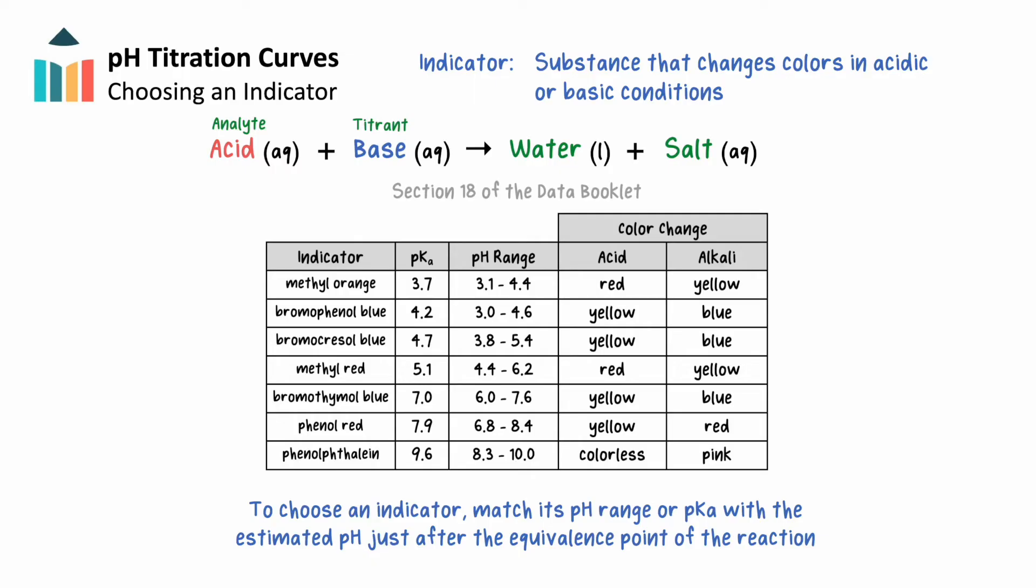For example, the indicator seen in the previous demo is phenolphthalein, which turns pink in the presence of hydroxide ions. If we're trying to choose between two indicators, say phenolphthalein and thymolphthalein, which share some overlap in the pH range, we can compare the target pH with the pKa of the indicator used. If the solution's pH were say closer to 9.6, we would choose phenolphthalein. As you can see, choosing an appropriate indicator for a titration isn't too complicated once you know the pH range just after the equivalence point.